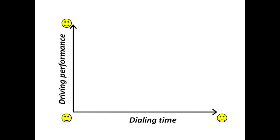On the horizontal axis, we plot the total dialing time, with shorter dialing times on the left. On the vertical axis, we plot driving performance, with better driving performance towards the bottom of the graph. What does performance of various strategies then look like?